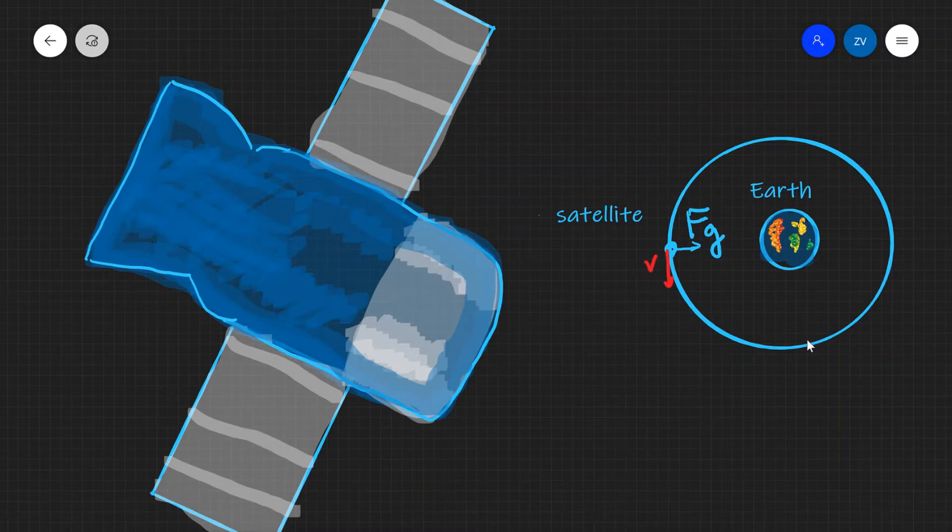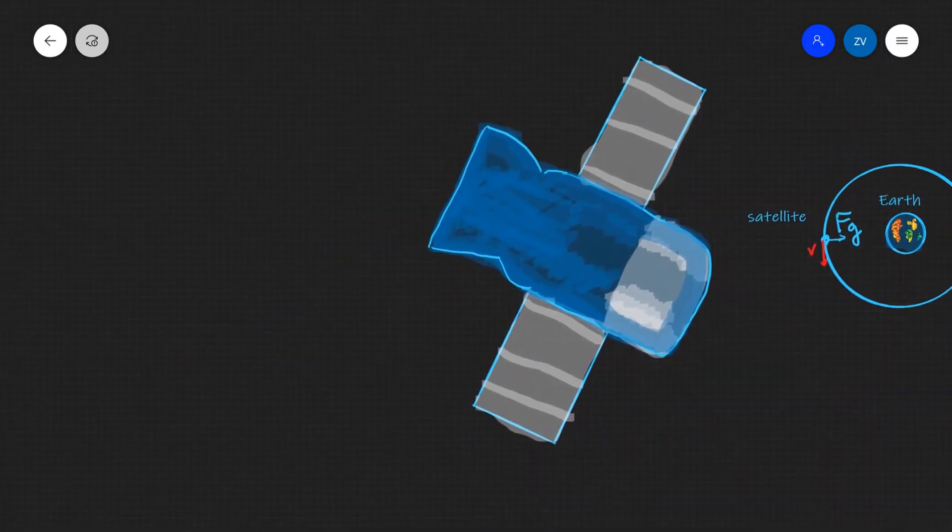In other words, this satellite is moving in circular motion. So that means that the force of gravity is actually providing a centripetal force which is keeping this satellite in motion, in circular motion.